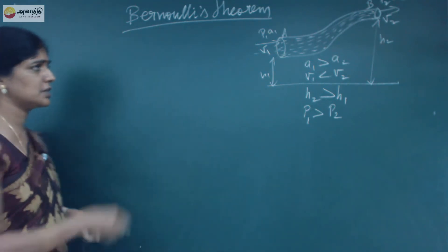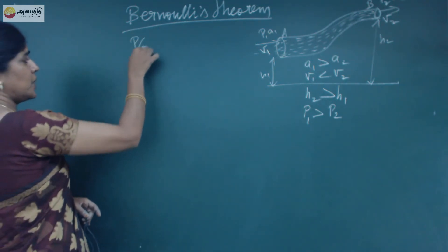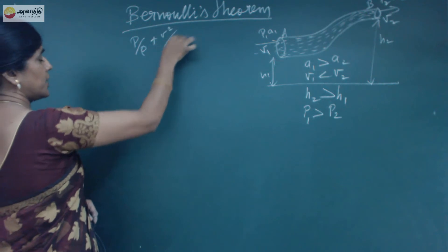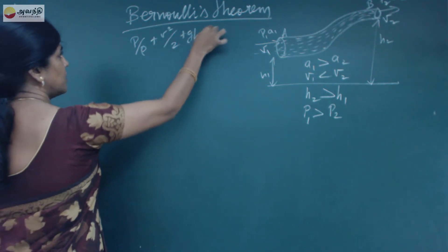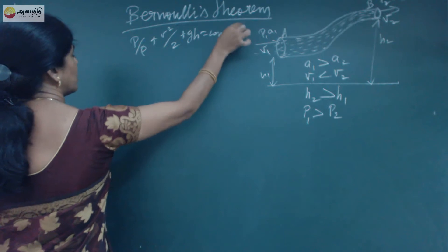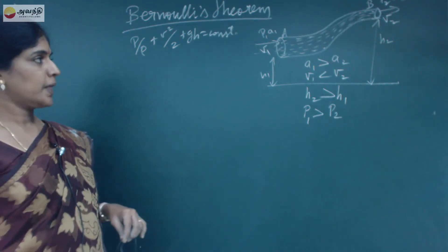We already know that the total energy is equal to P by rho plus V squared by 2 plus gH, equal to constant. This is the expression we are going to prove in Bernoulli's theorem.